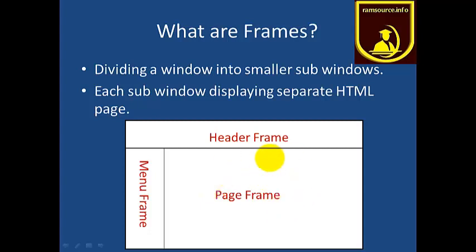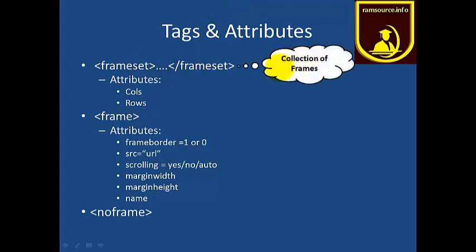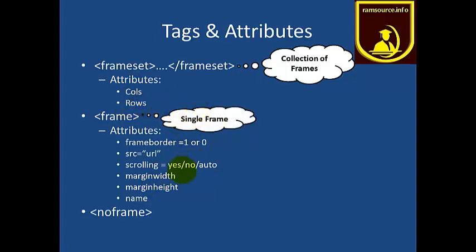Next, Tags and Attributes. In Frames, you implement tags and attributes in web pages. The first tag is Frameset — it is a collection of frames. When you bring all frames together, that is the Frameset. The Frameset tag has attributes: columns and rows. Each individual frame is identified with the Frame tag.